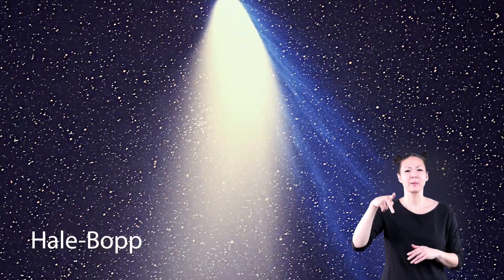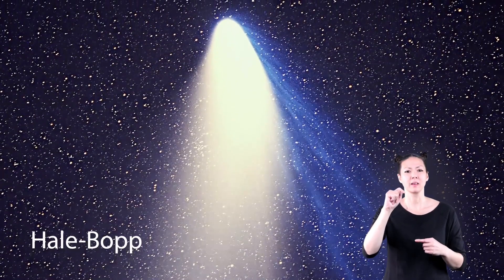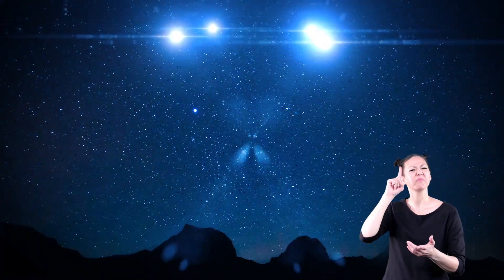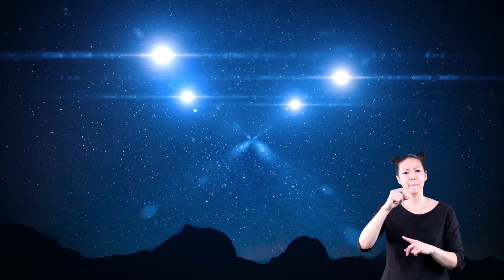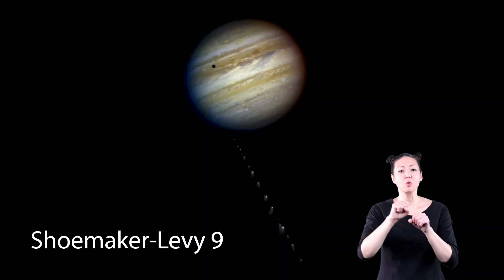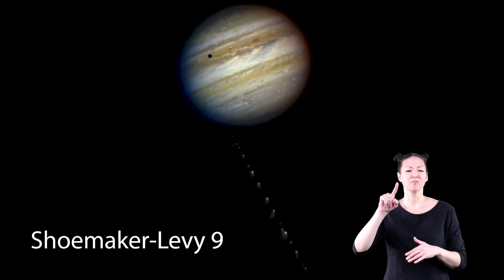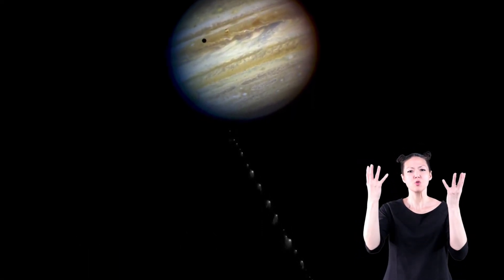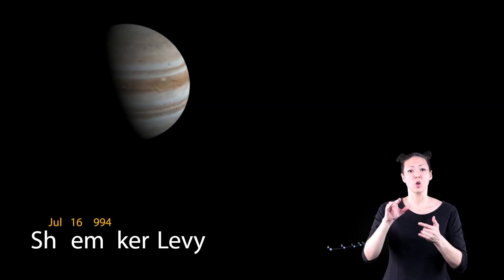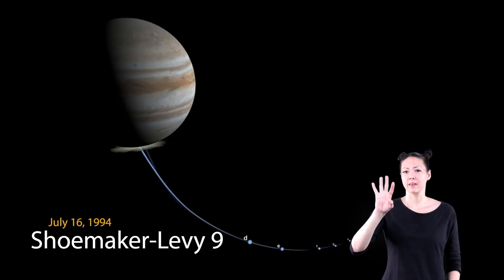Hale Bob is another famous comet. Some people from California once believed this comet was a spacecraft. Shoemaker Levy 9 was a string of comets that was captured by Jupiter's gravity. These comets began to orbit around Jupiter instead of the sun. During the week of July 16, 1994, those comets crashed into Jupiter while astronomers worldwide watched the incredible sight.